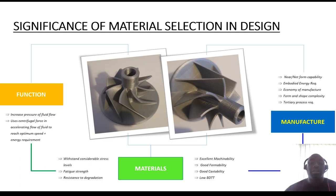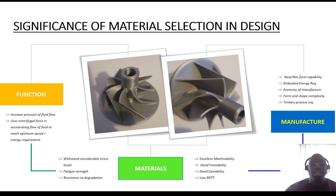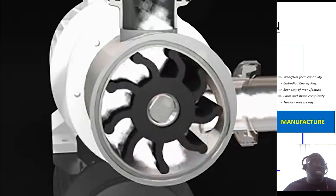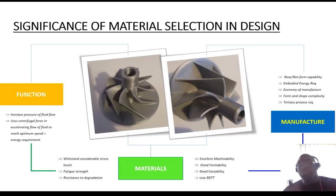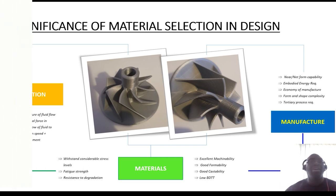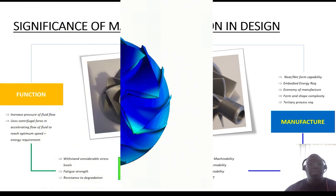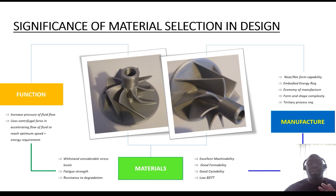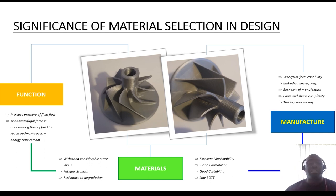We've got a picture of an impeller. This impeller is used to amplify the pressure in displacing fluid from one point to the other. In terms of how it functions, it needs to rotate at a defined speed to enable it to increase the pressure in moving or displacing fluid. As a result, the material will be subjected to a considerable amount of stresses due to the centrifugal force generated by the component's rotation. You also have the situation where fluids make contact with the component — what is the nature of the fluid, and is the interaction of the fluid going to cause the component to degrade? These are some of the things that need to be considered when selecting material.